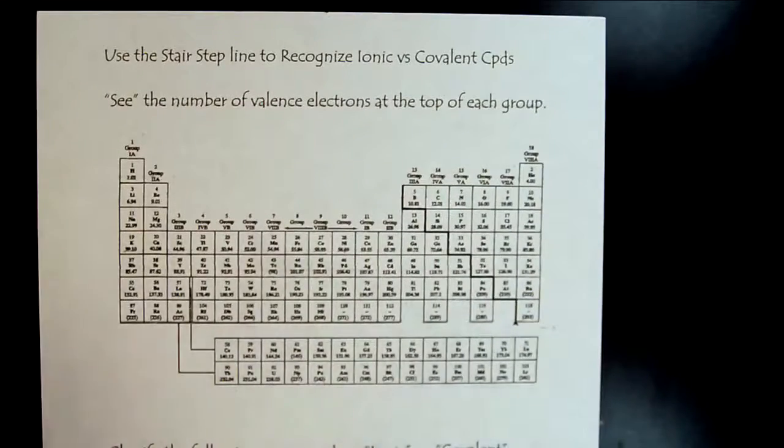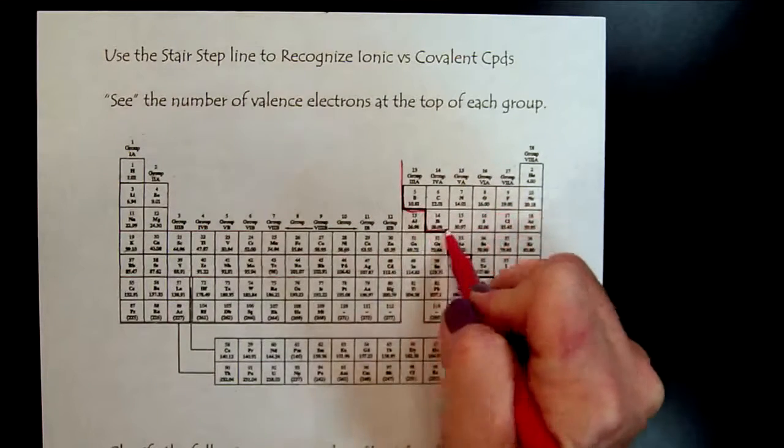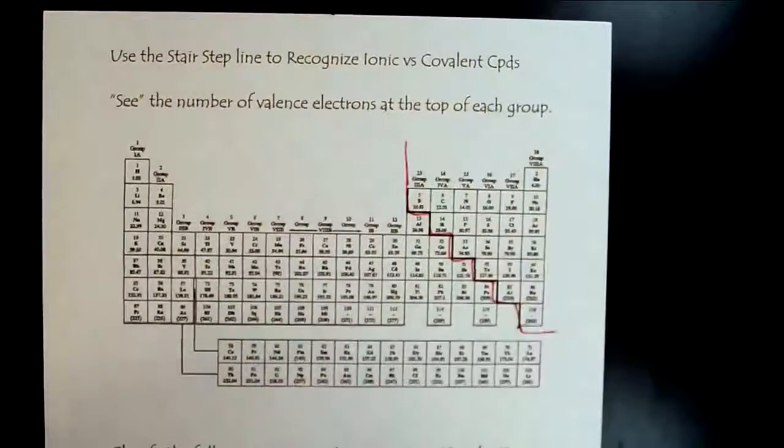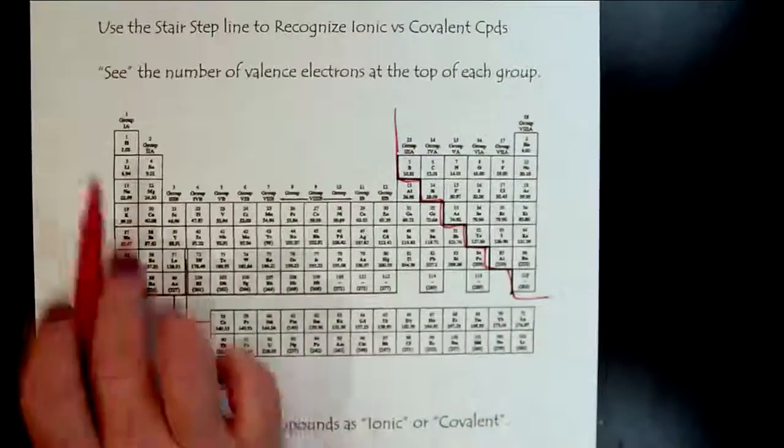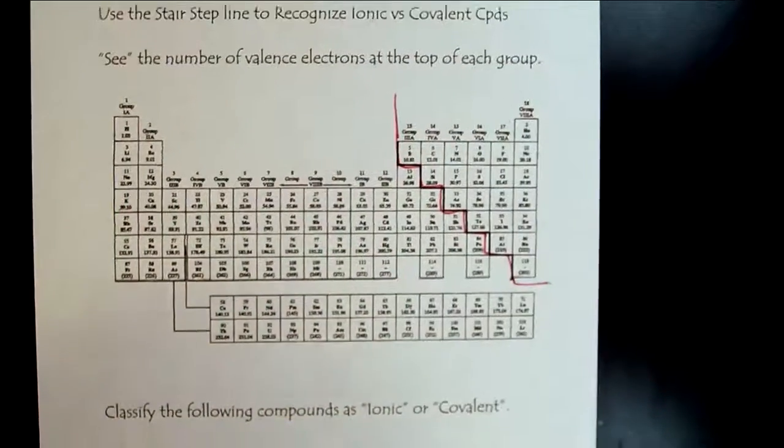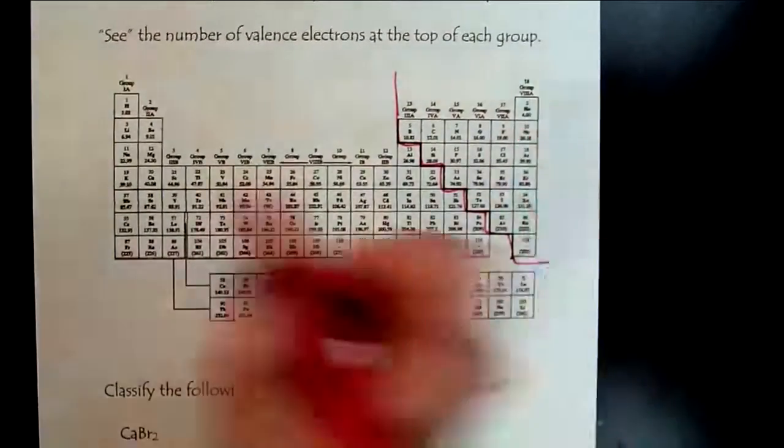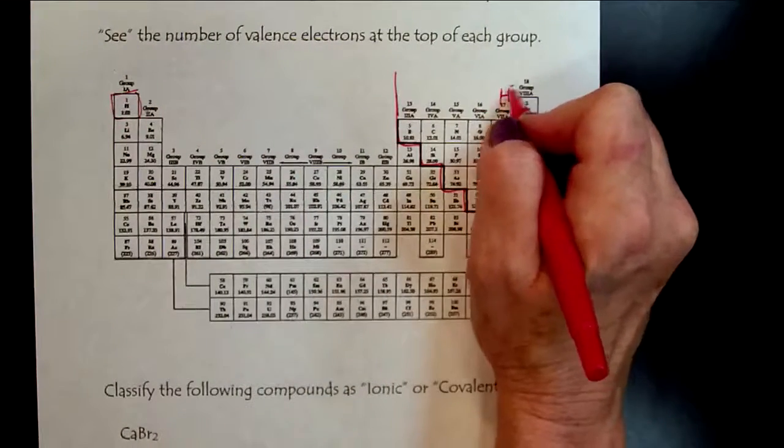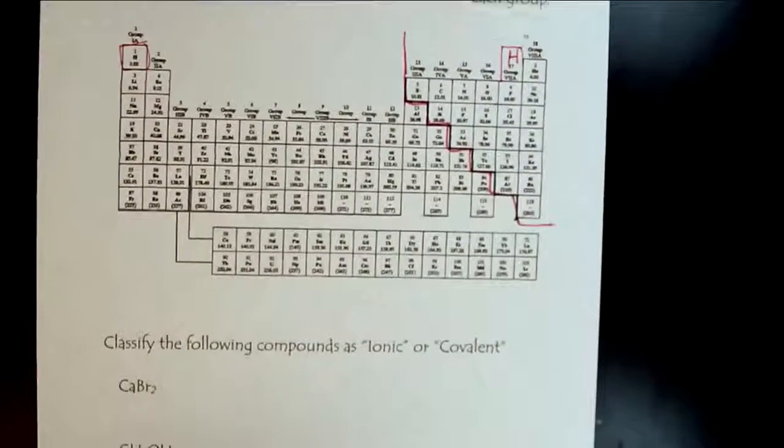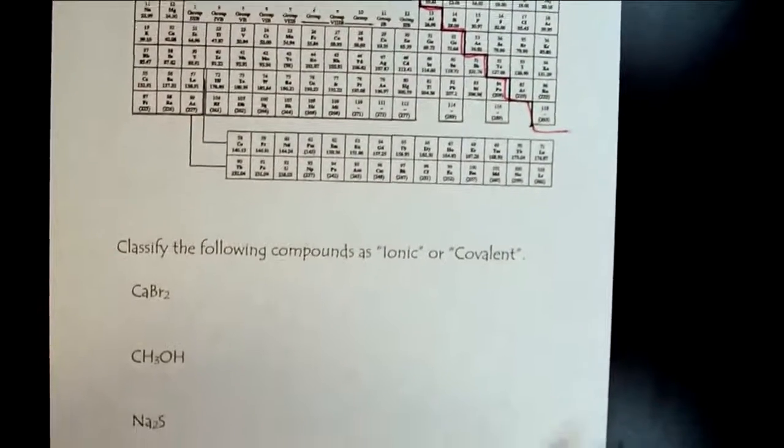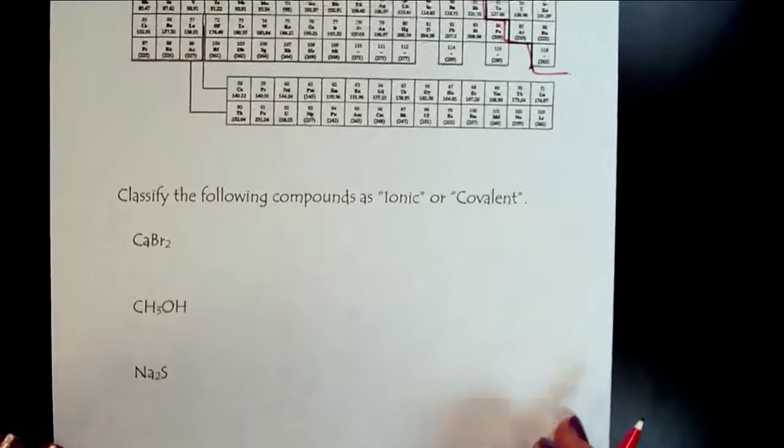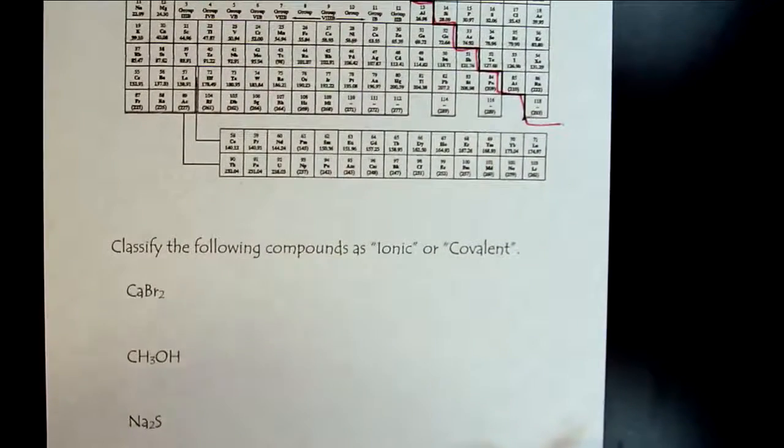First off, when we look at the periodic table, pay attention to that stair-stepped line. See the number of valence electrons at the top of each group. Remember that hydrogen is a non-metal. You want to see it in both places. And then as we come up, you'll just have to look at your periodic table. I won't be able to show you the whole thing.